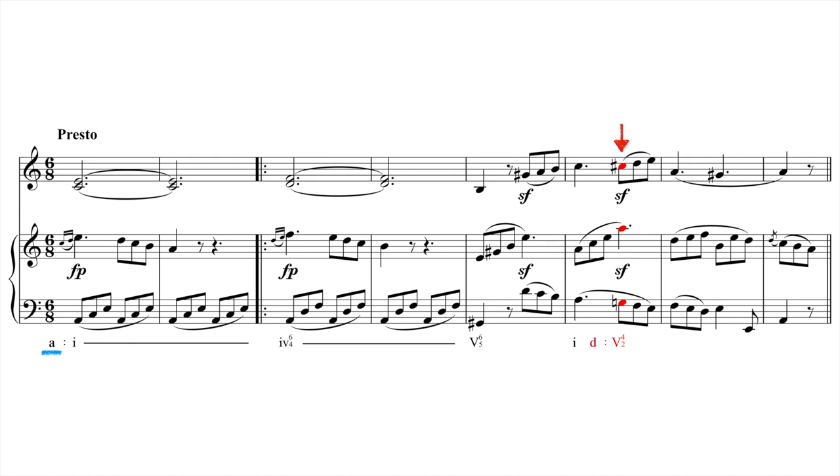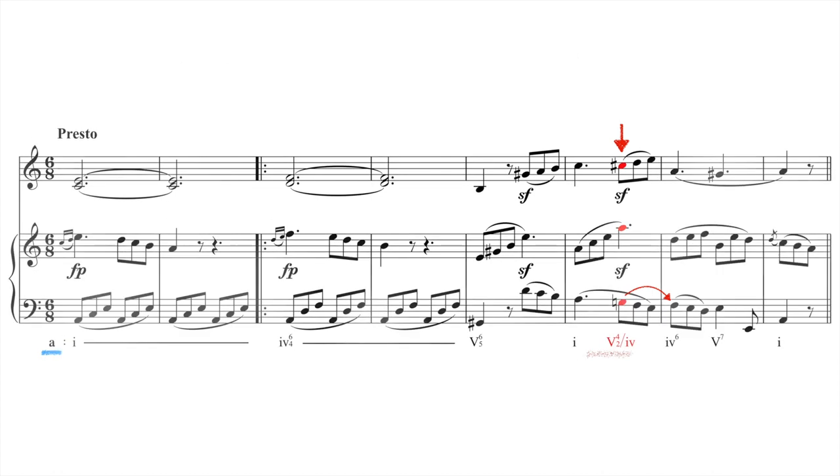The 7th in the bass, the G, resolves as expected to the F on the next downbeat. Then the phrase cadences clearly back in A minor. It would be a stretch to call this a modulation since it only lasts for one chord and there's no cadence in D minor. It's a typical example of a secondary dominant, 5-4-2 of 4 in this case. What this chord does is to enrich the harmonic trajectory of the phrase. It's no accident that it occurs at the peak of the phrase. A unique, special event like this needs to happen at a special place if it's not to sound random.